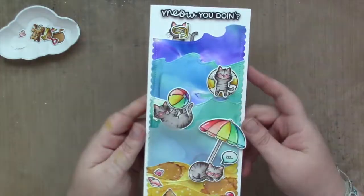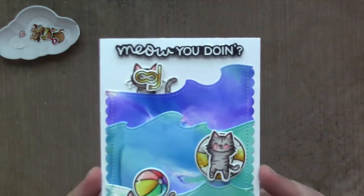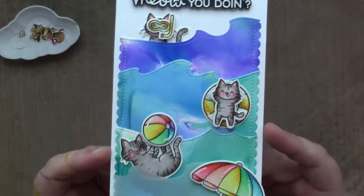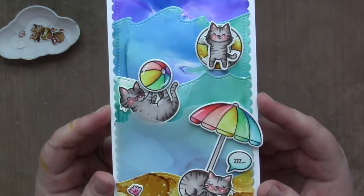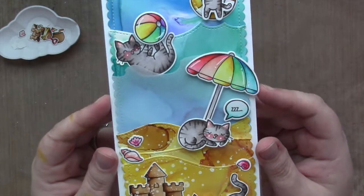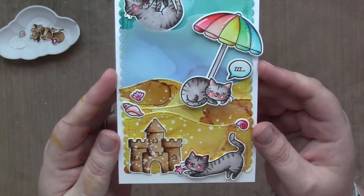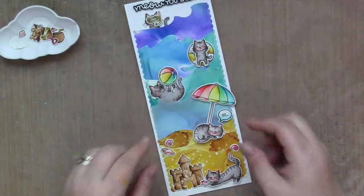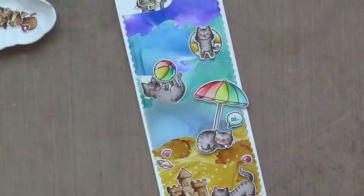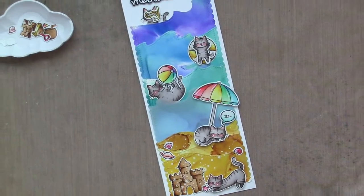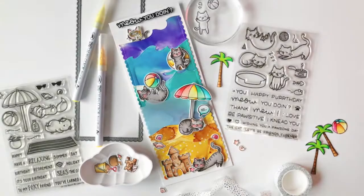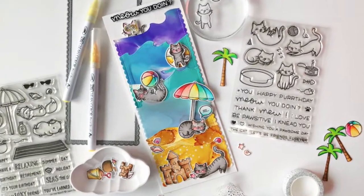I don't know who's my favorite I really like the snorkeler I don't know I guess I'm going to still stick with this one sleeping under the umbrella. Which cat are you at the beach are you making sandcastles are you playing in the water which one are you? Thanks so much for stopping by I hope that this made you smile and check it out on the Lawn Fawn blog if you want to see more bye.